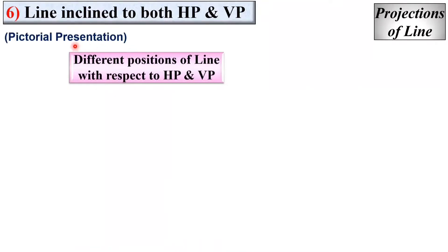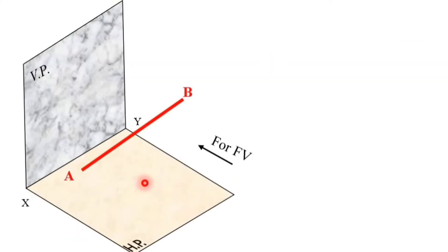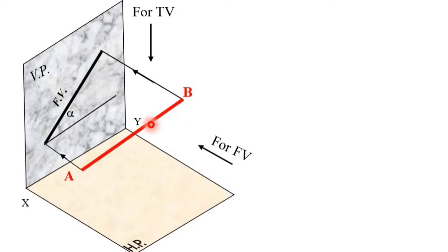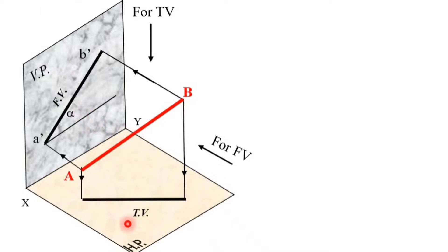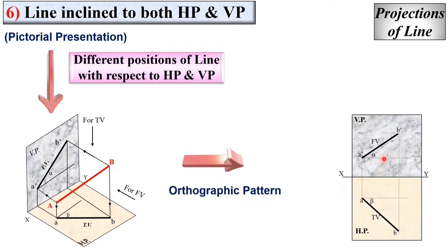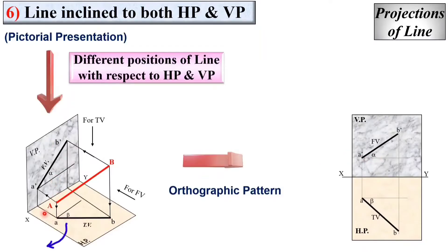Let us first see the pictorial presentation for case number 6, which we also discussed in the last lecture. You can refer to the earlier video in the playlist to understand these different cases. Here the top view is denoted by ab and the front view is denoted by a'b'. HP always rotates 90 degrees in the clockwise direction so that ab moves below the XY line.